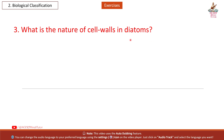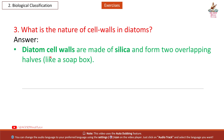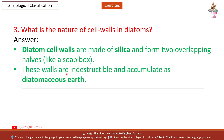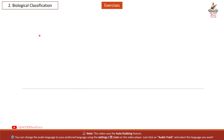Answer: Diatom cell walls are made of silica and form two overlapping halves like a soap box. These walls are indestructible and accumulate as diatomaceous earth.